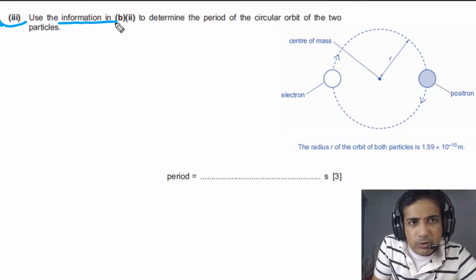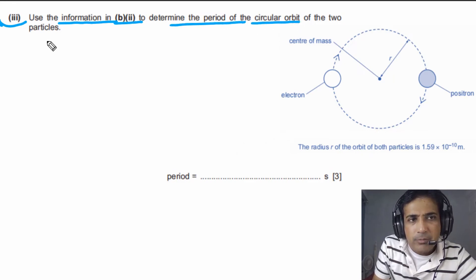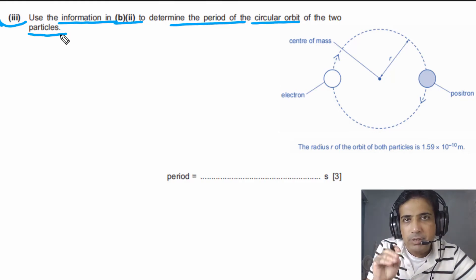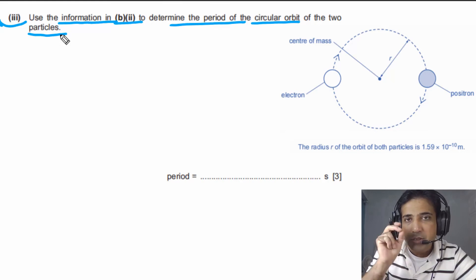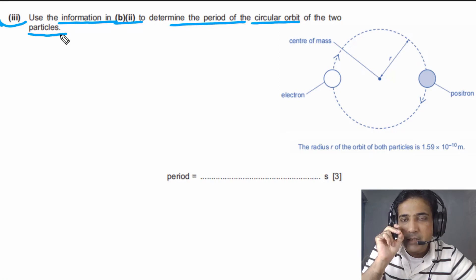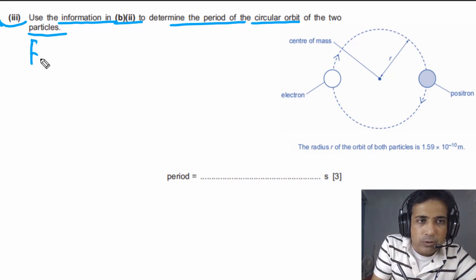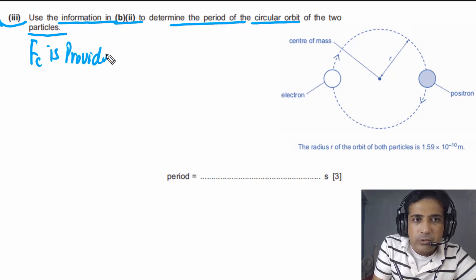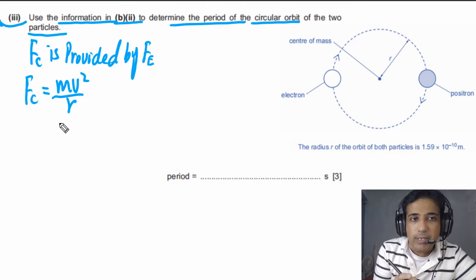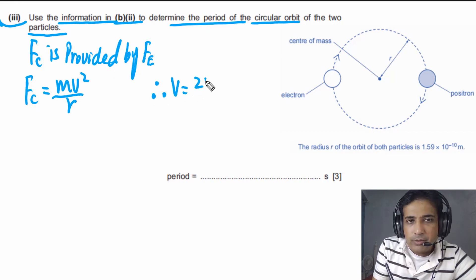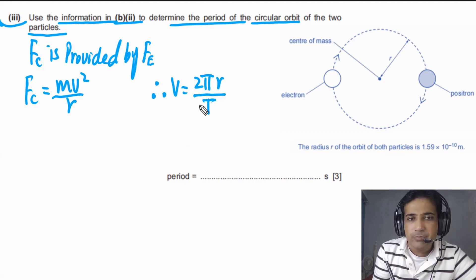For part B3, we use the information from B2 to determine the period of the circular orbit. Both particles have the same period and the same speed. To calculate the time period, we consider circular motion and centripetal force. Centripetal force is provided by the electric force, and centripetal force equals mv² / r. The speed of a particle in circular orbit is v = 2πr / T.